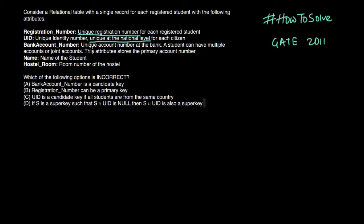Now next is bank account number. So unique account number at bank. So at bank level it is unique. Now it is also given that a student can have multiple account numbers. So multiple accounts a student can have or even they can have joint account. Now this attribute stores the primary account number. So if for a student we have multiple account numbers then only the primary account number will be stored.